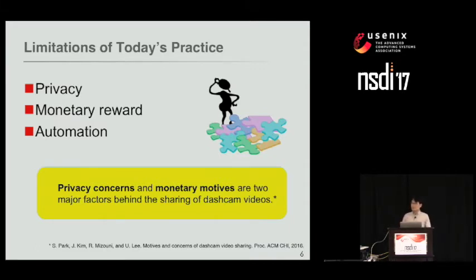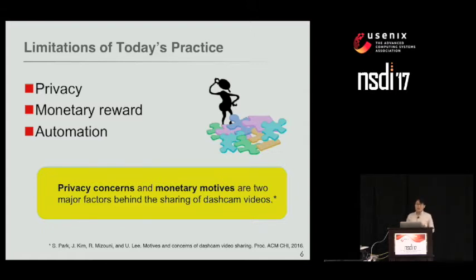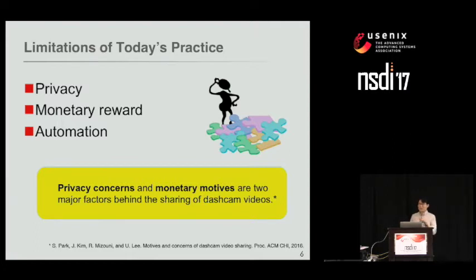There are three reasons limiting participation. First, people are reluctant to share their videos for fear of revealing their location history — they want strong anonymity. Second, people are not really interested unless there is something that concerns them, so they need some incentive. Third, people do not like to be burdened by manual procedures, so we need automation for hassle-free participation.